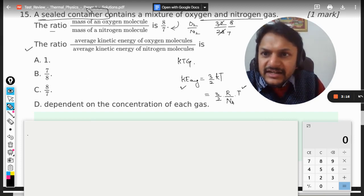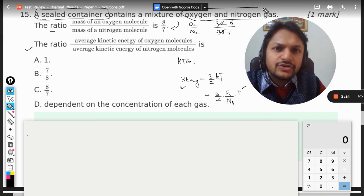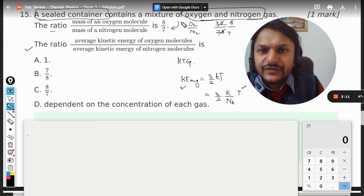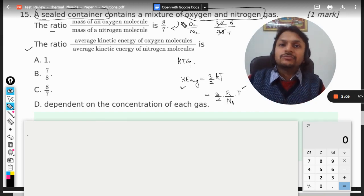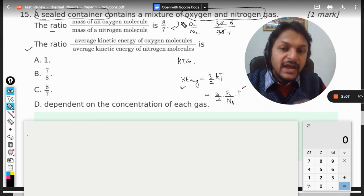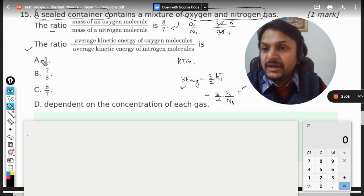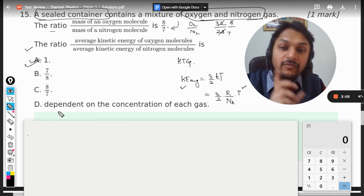So it doesn't matter. Kinetic energy depends only on temperature T. Now, if this is a sealed container and oxygen and nitrogen are contained there, obviously the temperature for oxygen molecules and the nitrogen molecules comes out to be same. Hence the kinetic energies will be same, so the answer will be 1.